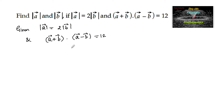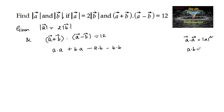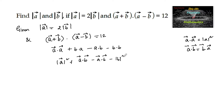So we can write here: a dot a plus b dot a minus a dot b minus b dot b. Since a dot a is equal to mod a squared, and dot product is commutative so a dot b equals b dot a, we can write mod a squared plus a dot b minus a dot b minus mod b squared, which is equal to 12.